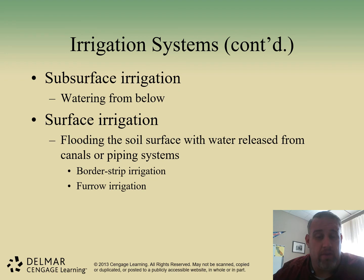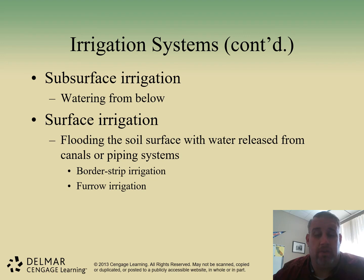The original surface irrigation was the flooding of farmland. This would have been furrows, where you send water down a furrow, or border strip irrigation — a levee system placed around a farm where the whole area is flooded to moisten the soil. The furrows are the long strips and the border strip floods the entire area.